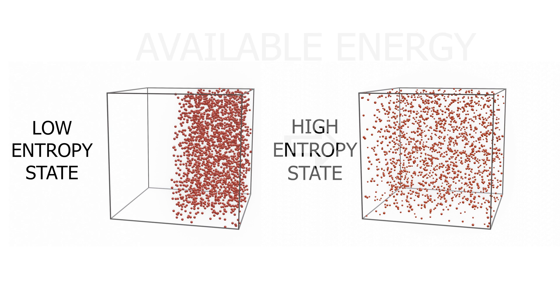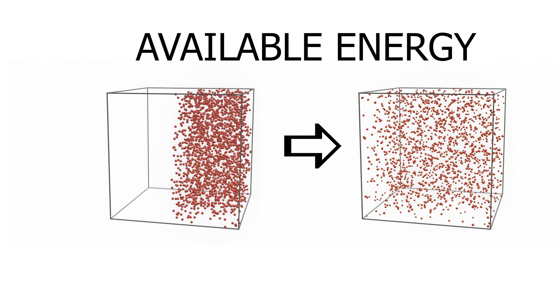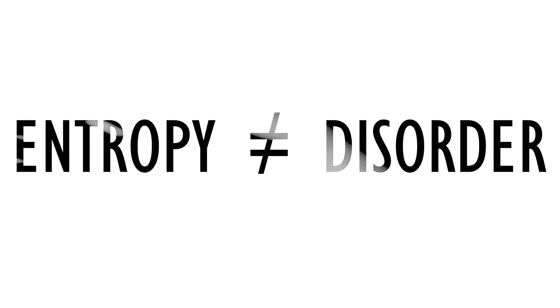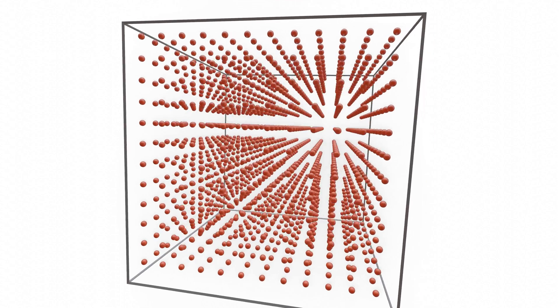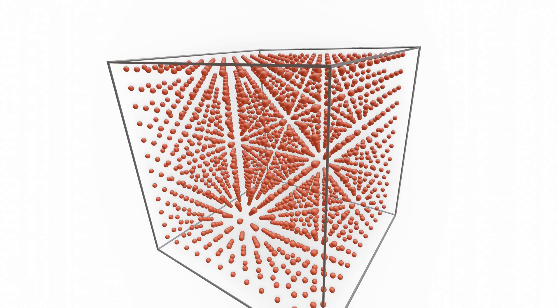Thus, we can define entropy as the amount of available energy a system can provide before it reaches the most probable state of thermodynamic equilibrium. If you wanted to connect this to information theory, entropy is basically the amount of hidden information based on thermodynamic knowledge only — meaning you can exchange information for entropy. So here we can see how entropy isn't exactly disorder. According to us, a certain arrangement looks ordered, but in reality it is just one of several microstates of a high-entropic macrostate.